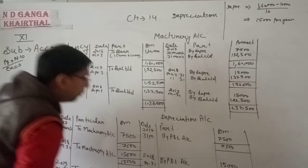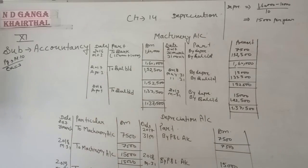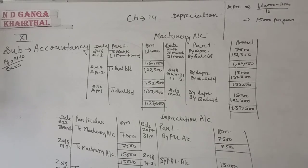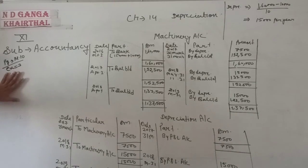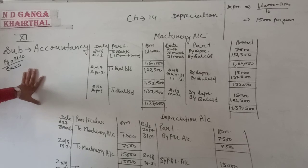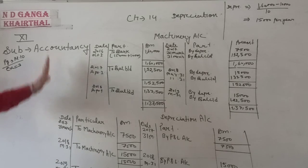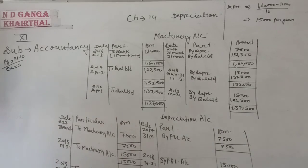So we have prepared the machinery account and the depreciation account up to 3 financial years for Chapter 14, Depreciation, problem 14.10.